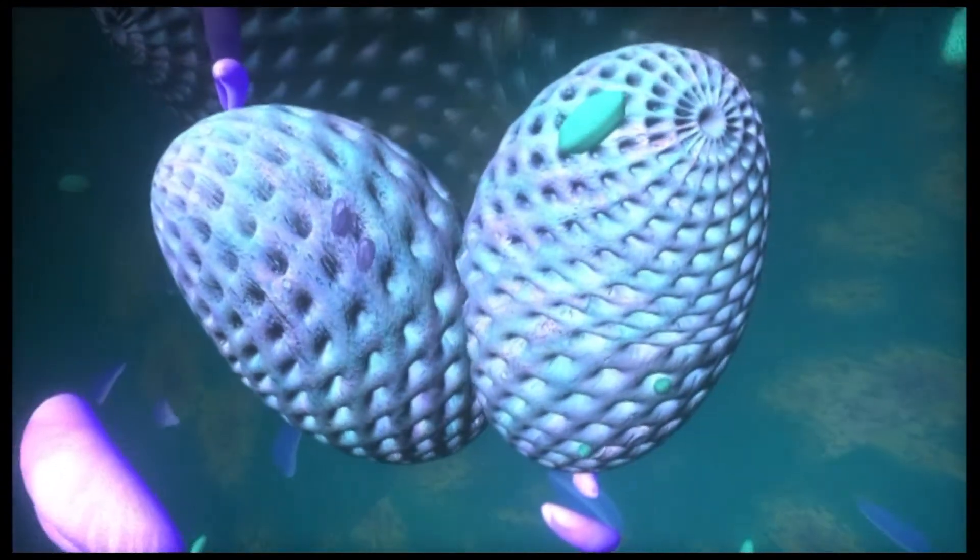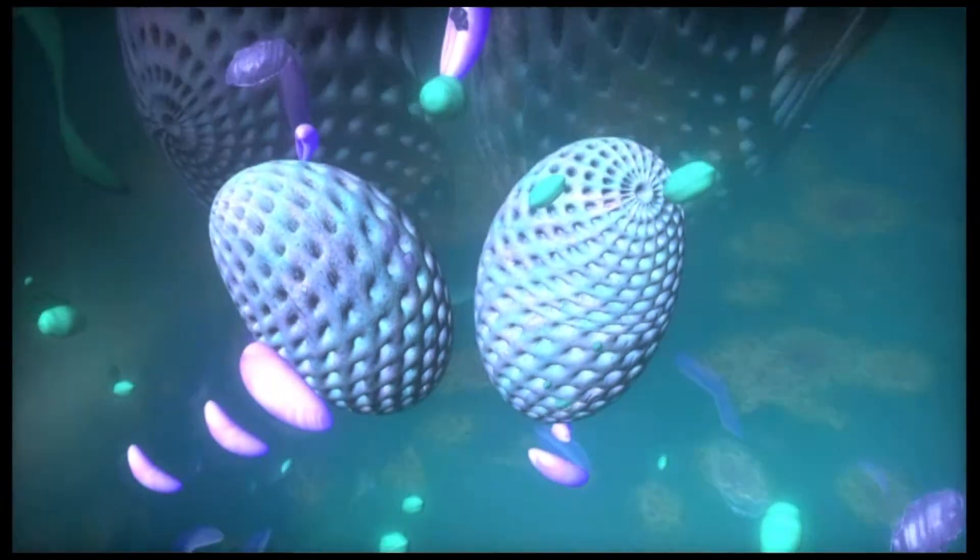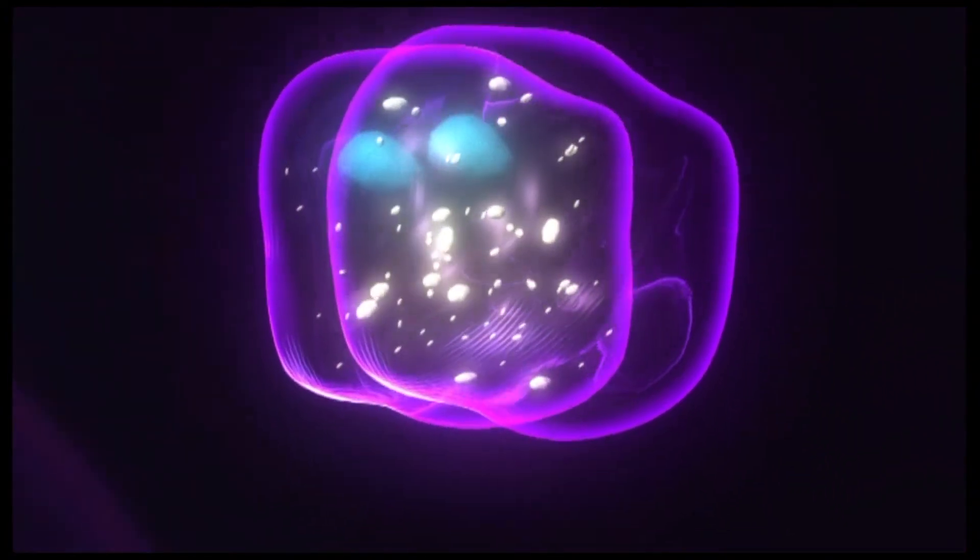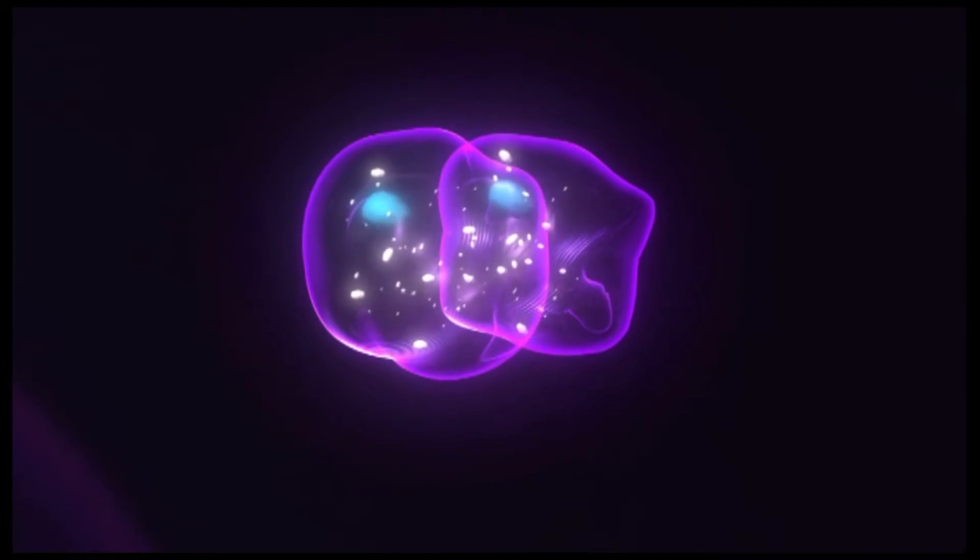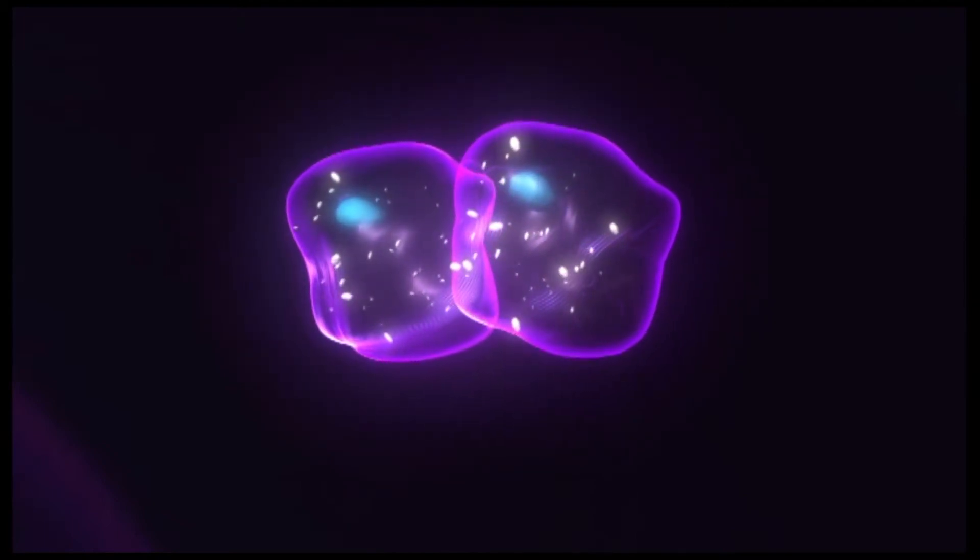Finally, when cytokinesis occurs, the cytoplasm separates and the cells divide into two genetically identical structures. Cell division is complete.